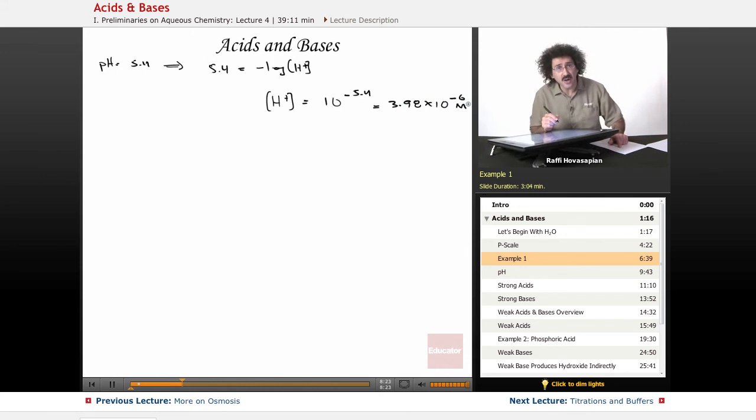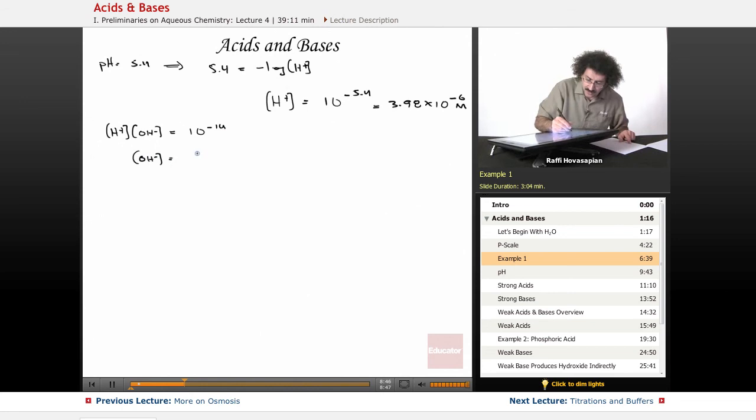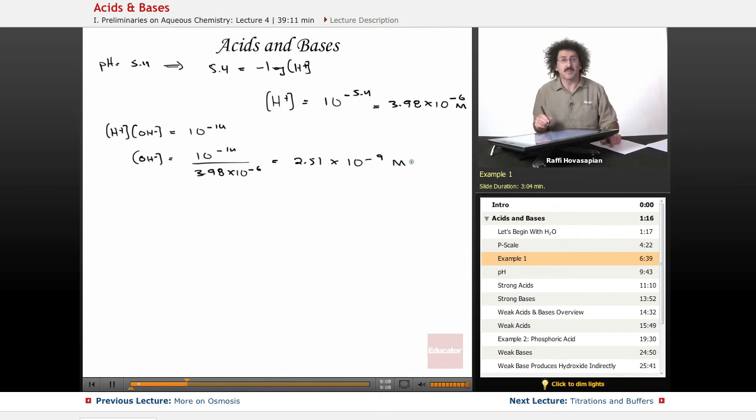The concentration of hydrogen ion in this particular glycine solution is 3.98 times 10 to the negative 6 moles per liter. We know that the hydrogen ion concentration times the hydroxide ion concentration is equal to 10 to the negative 14, 1.0 times 10 to the negative 14. Therefore, the hydroxide ion concentration equals 10 to the negative 14 divided by the hydrogen ion concentration, which is 3.98 times 10 to the negative 6. And when we do this calculation, we get 2.51 times 10 to the negative 9 molarity.